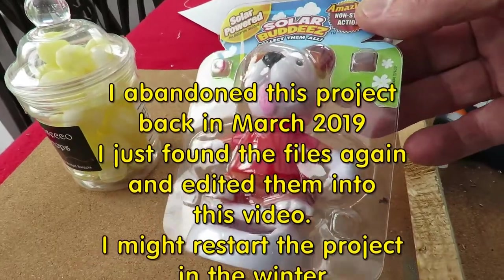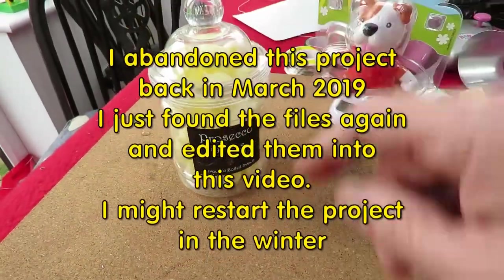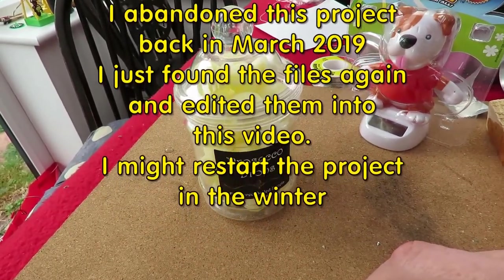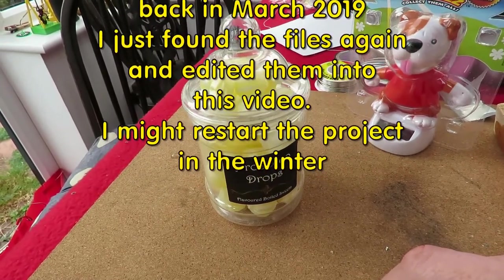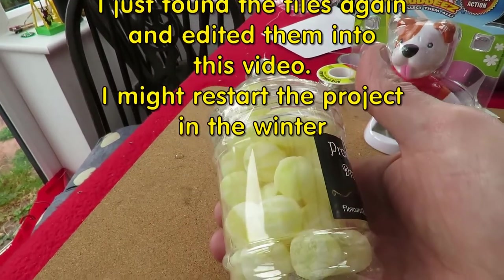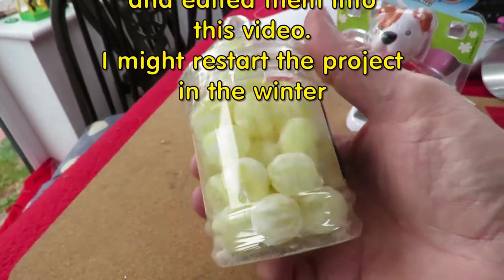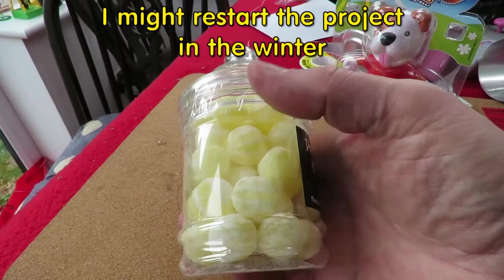I was looking for a bell jar. Poundland had some back around Christmas time with novelties inside them, but they haven't got any in stock at the moment. So this is just a plastic jar of sweets. It's about the right size for what I've got in mind, so I'll empty the sweets out and see if we can use it.